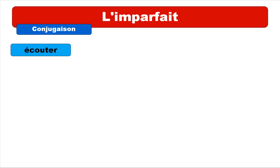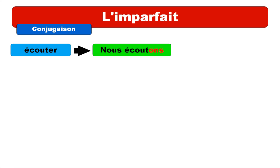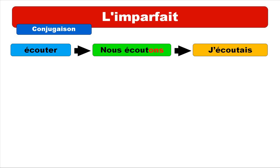Let's see that in action with a regular verb: écouter. Remember how to proceed — we take the nous form in the present: 'nous écoutons'. We take away the '-ons', and combine it with the ending for 'je' at the imparfait, and we get 'j'écoutais'.